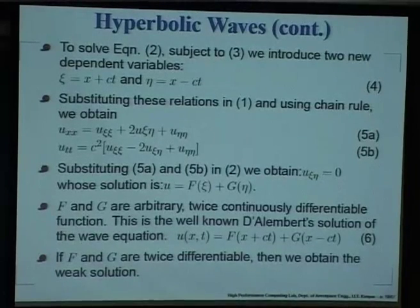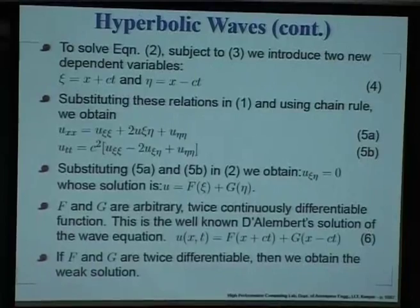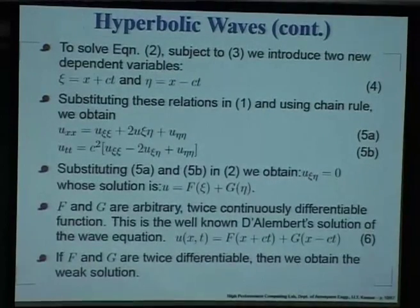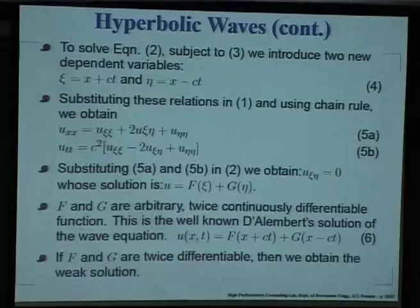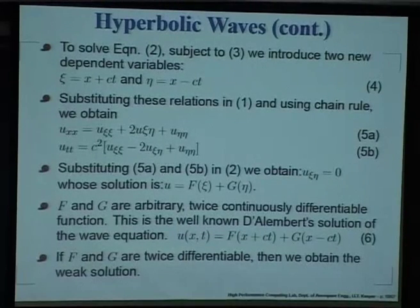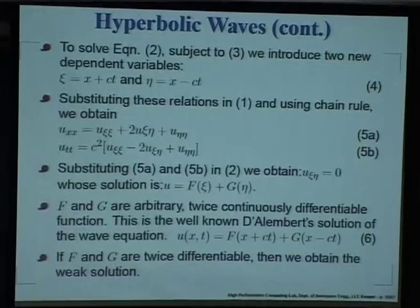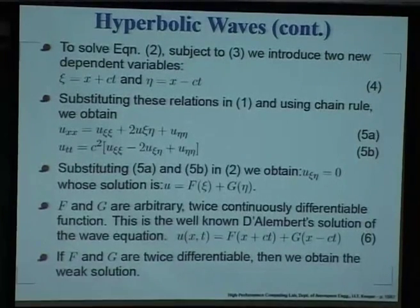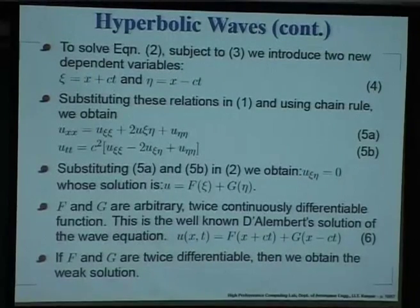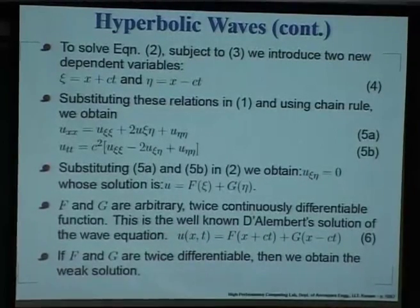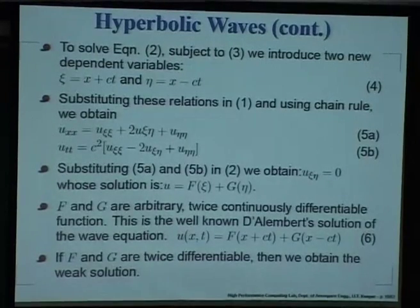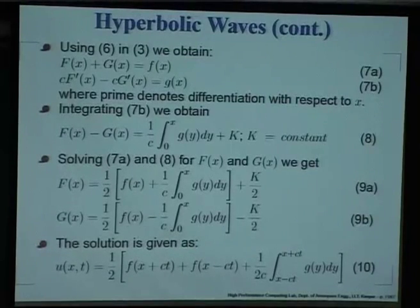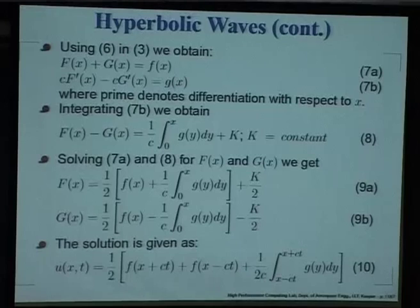What happens then is you can integrate twice, and you will get two functions F(ξ) and G(η) — twice continuously differentiable arbitrary functions. This is what D'Alembert obtained, and the solution works out to F(x + ct) + G(x − ct). All you have to do is figure out what capital F and capital G are. If f and g are not even differentiable we can obtain weak solutions, but we will not worry about that for the time being. What we need to do is substitute that generic solution into our initial conditions.